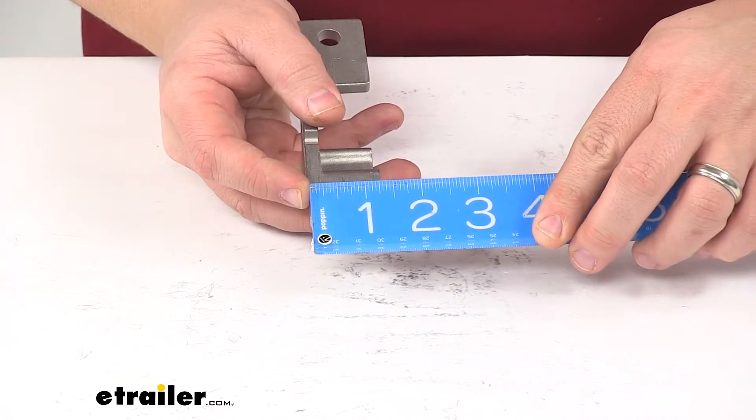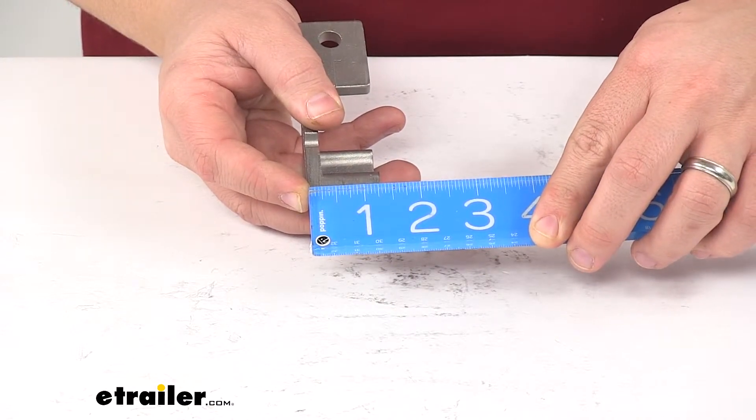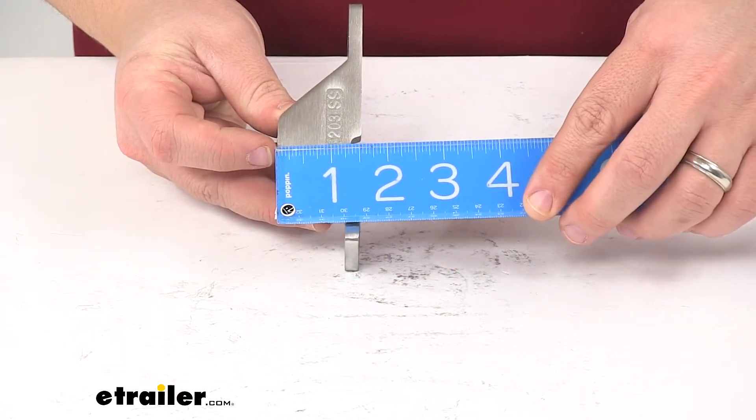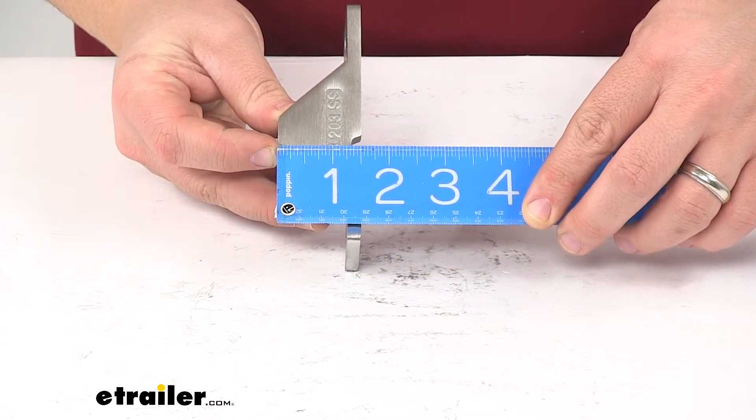Edge to edge going this direction is about one and five-sixteenths inches. And the overall depth, measuring from the front of the unit to the back of the unit, is about an inch and a half.